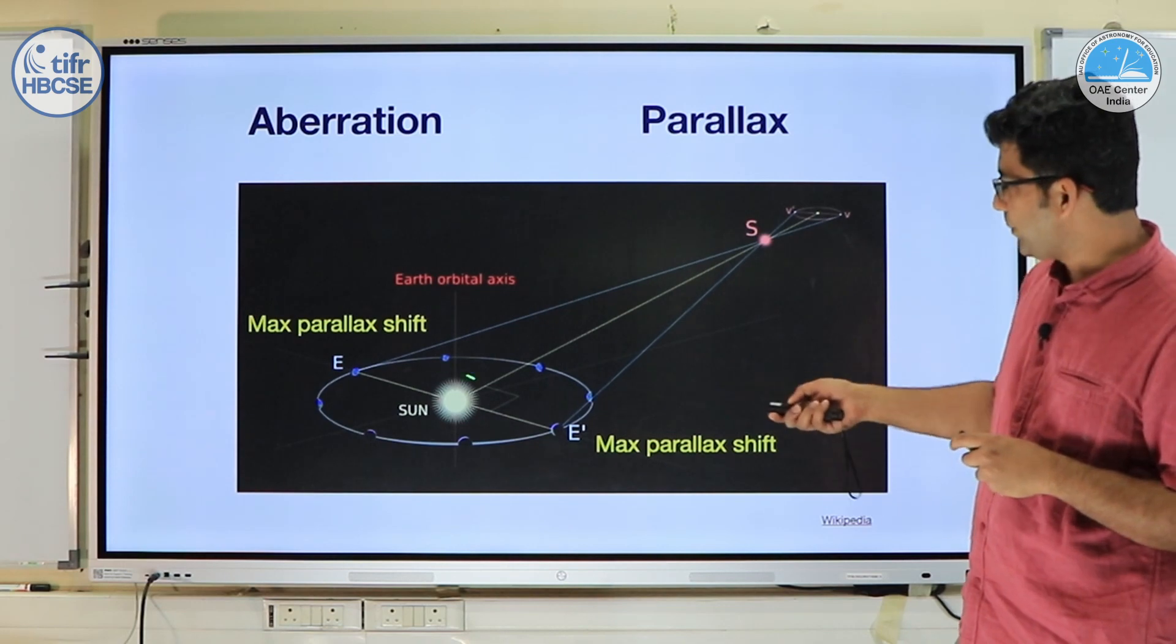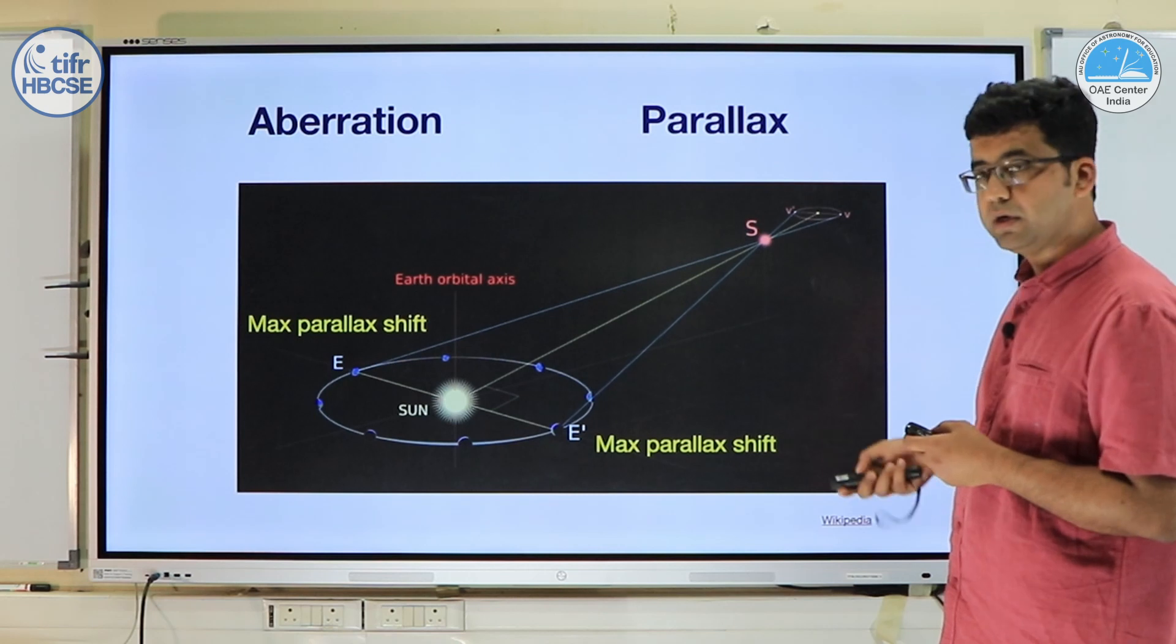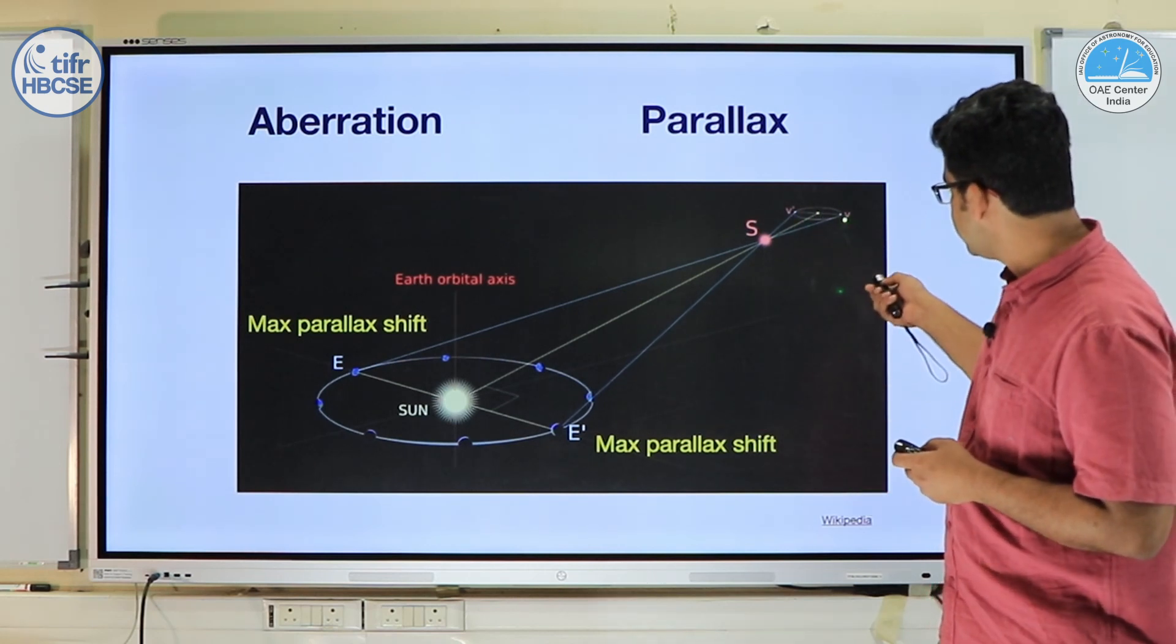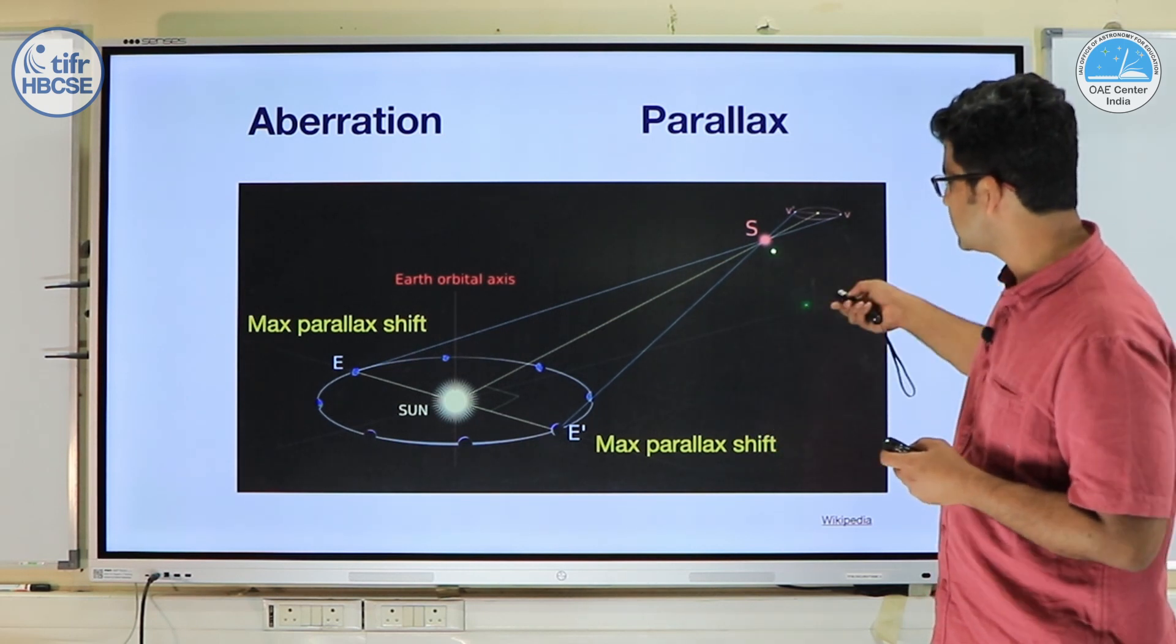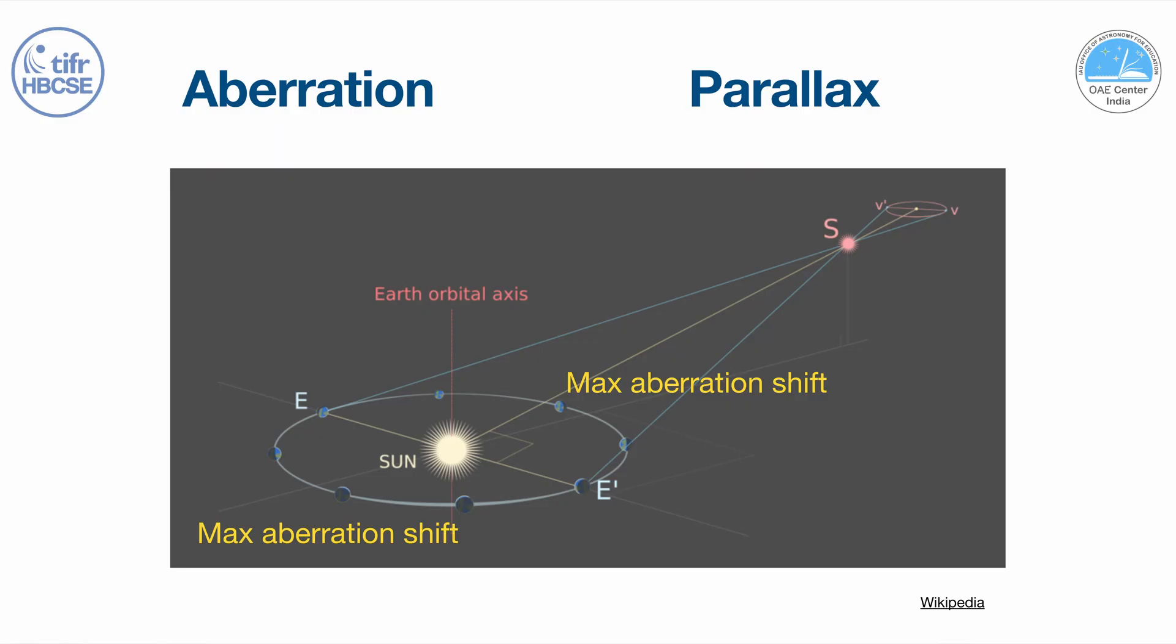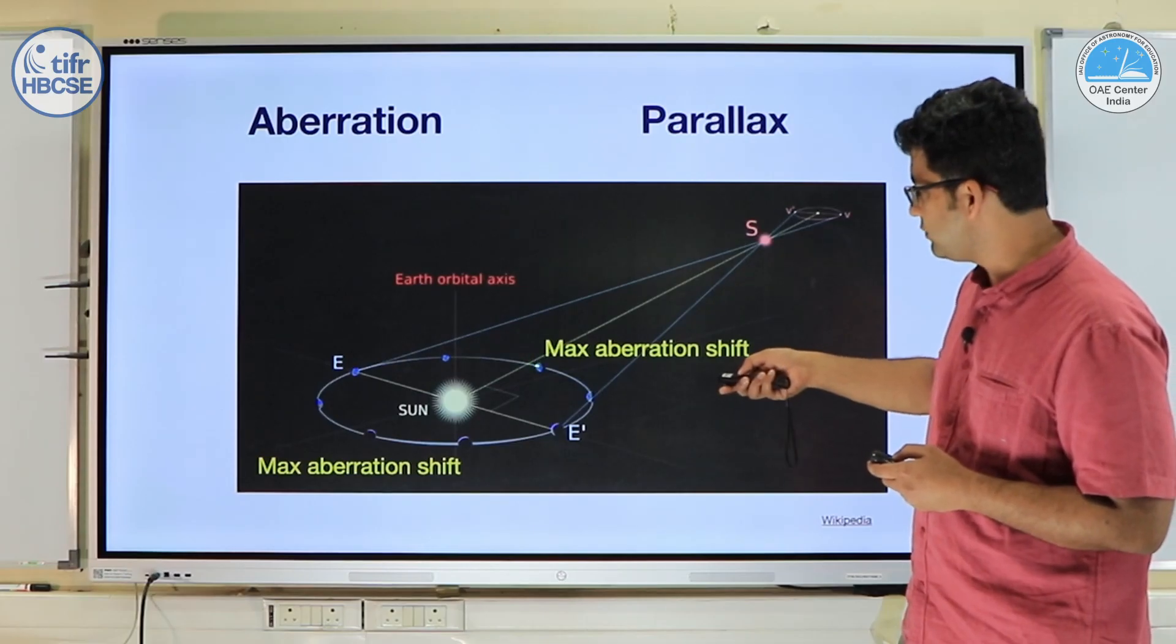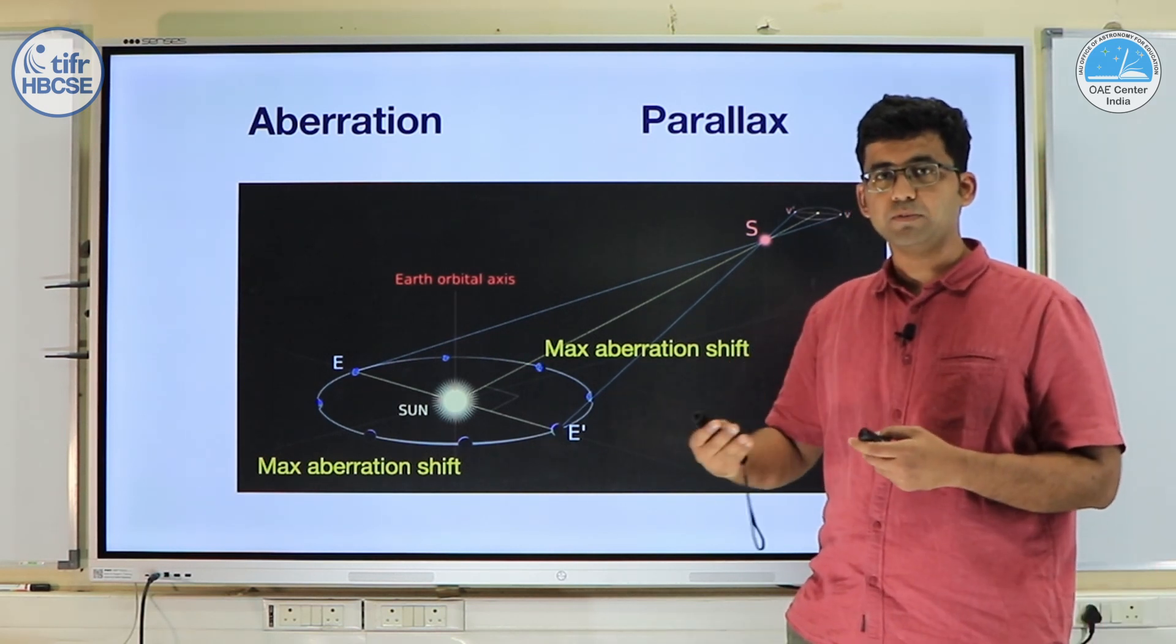So annual parallax happens when the Earth goes around the sun and it causes the observed direction of a nearby star to change, causing this kind of a parallax ellipse. Now the maximum shift that you get happens when the Earth-sun line is perpendicular to the sun-star line. That is when you get the maximum parallax shift. The maximum aberration shift however happens when Earth is moving perpendicular to the line joining the sun and the star. So they happen at completely different times of the year.